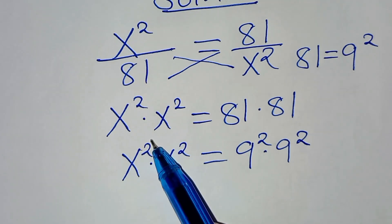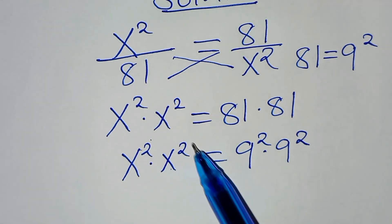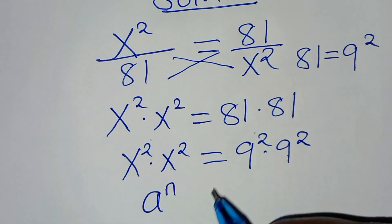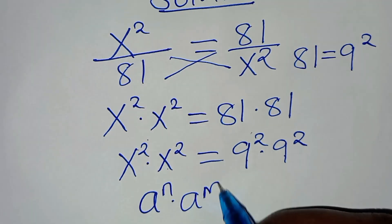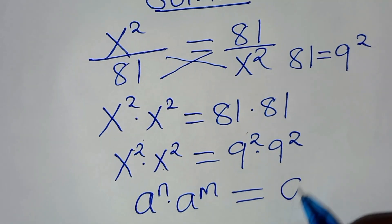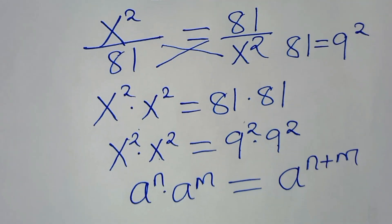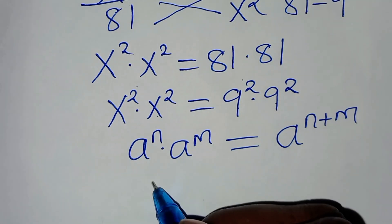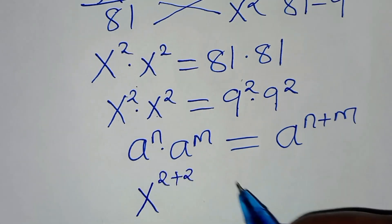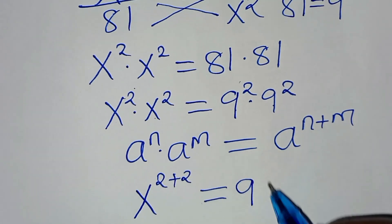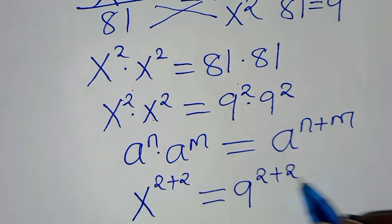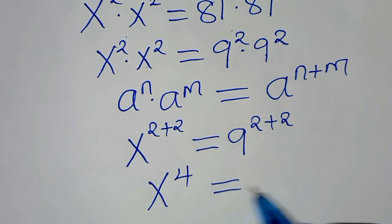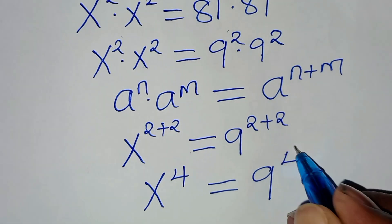The next step is that x to the power of 2 times x to the power of 2, and 9 to the power of 2 times 9 to the power of 2, is in the form of a to the power of n times a to the power of m, which we can express as a to the power of n plus m. Applying this exponent property, we have x to the power of 2 plus 2, equal to 9 raised to the power of 2 plus 2. So we have x to the power of 4, equal to 9 raised to the power of 4.